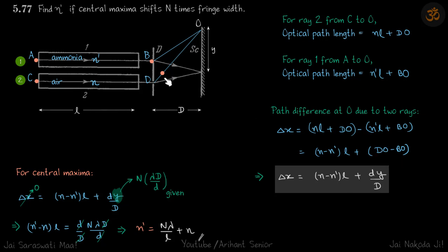Now DO minus BO is the geometrical path difference. And for a point which is a distance Y from axis, that is given by dY by D. So delta X is (n - n')L plus dY by D. So this is our equation.